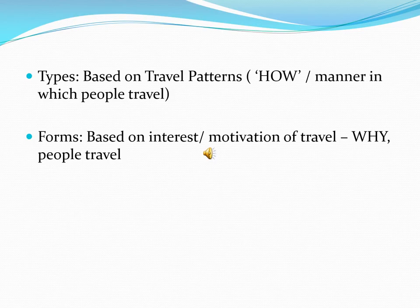To differentiate between types and forms of tourism, there is one criteria we have adopted. The typology will be based upon broader parameters of how people travel — what is their way of travel, the manner in which people are moving from one place to another. Forms of tourism, on the other hand, are based on the interest or travel motivation — why people travel.